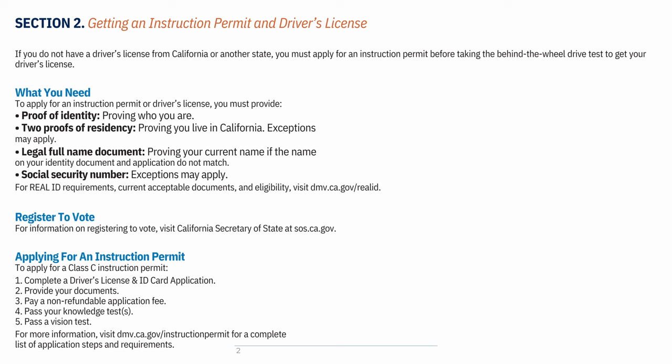To apply for a Class C instruction permit: 1. Complete a driver's license and ID card application. 2. Provide your documents. 3. Pay a non-refundable application fee. 4. Pass your knowledge test. 5. Pass a vision test. For more information, visit dmv.ca.gov for the complete list of application steps and requirements.